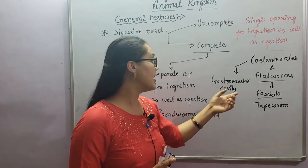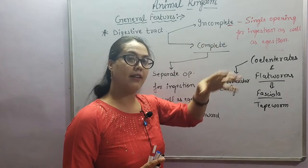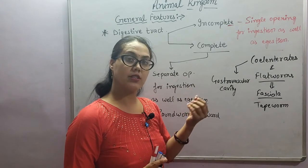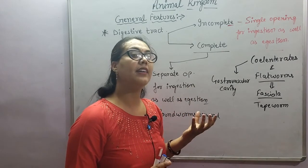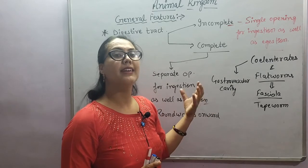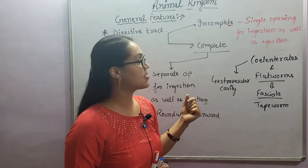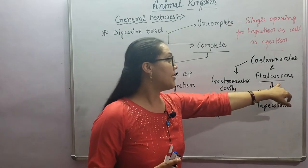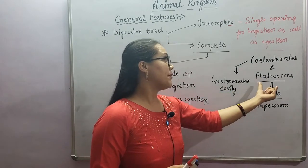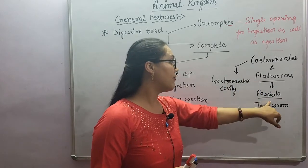The gastrovascular cavity acts as both a digestive cavity - food is digested there - and also water enters the tube. Along with the water current, oxygen also enters this tube, so it acts as a carrier of oxygen as well. That is why we call it the gastrovascular cavity. Flatworms also have an incomplete digestive tract.